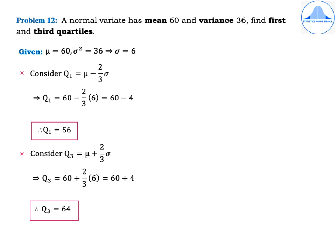Problem 12: A normal variate has mean 60 and variance 36 — find the first and third quartiles. Given: mu = 60 and sigma² = 36, which implies sigma = 6. Each part can be asked as a separate two-mark problem, with one mark for the formula and one for the solution.